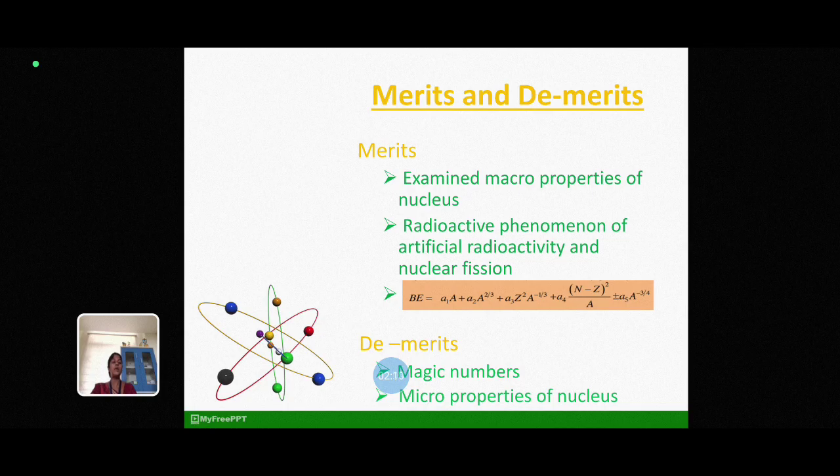While the third term refers to electrostatic repulsion between each pair of protons in a nucleus. Fourth term reflects N is equal to Z stability. The last term is positive for even-even nuclei and it is negative for odd-odd nuclei and delta is equal to 0 for an odd atomic number. Since binding energy can be described well for these nuclei without this term.